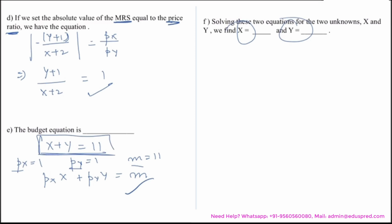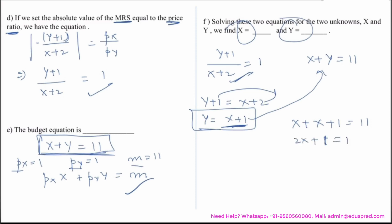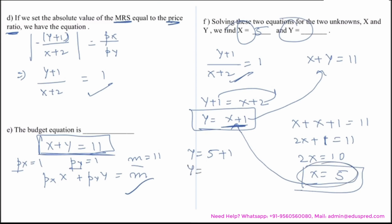Solving the two equations — (y+1)/(x+2) = 1 and x + y = 11 — we get y+1 = x+2, so y = x+1. Substituting into the budget equation: x + (x+1) = 11, giving 2x+1 = 11, so 2x = 10 and x = 5. Substituting back, y = 5+1 = 6. Therefore x = 5 and y = 6.